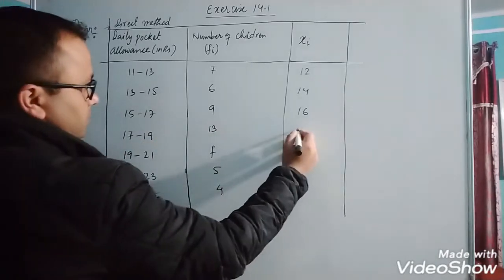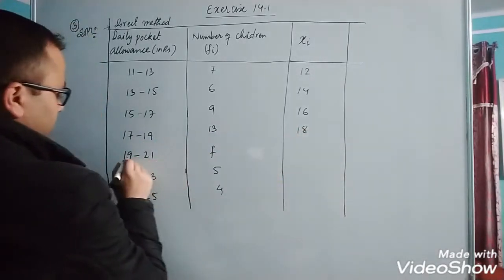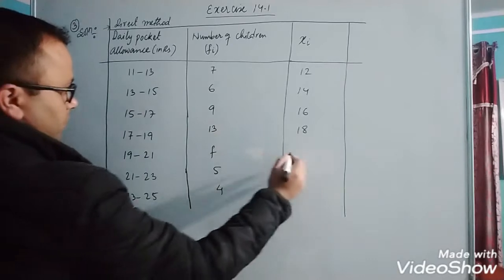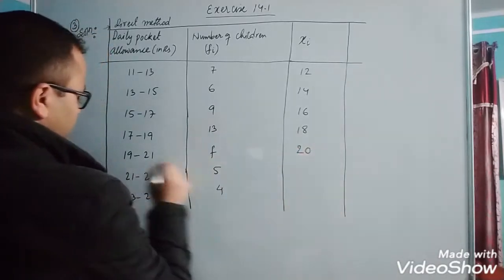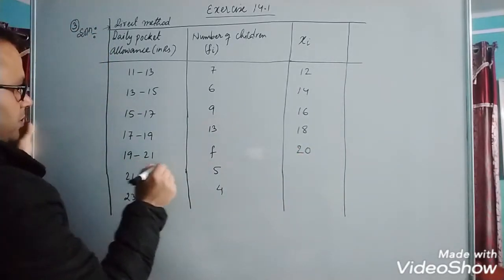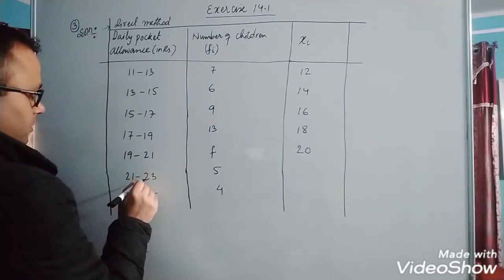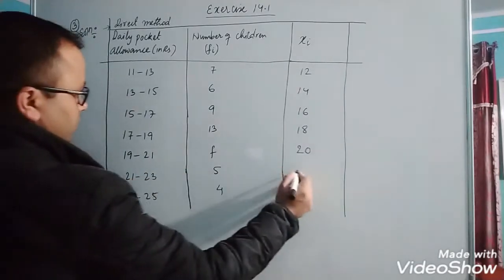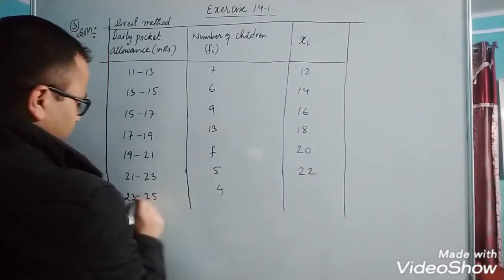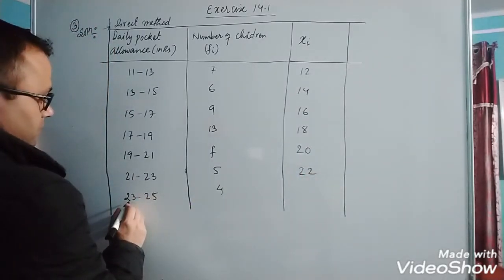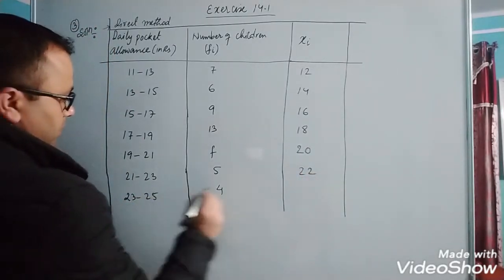19 plus 21 is 40 divided by 2, which is 20. 21 plus 23 is 44 divided by 2, which is 22. 23 plus 25 divided by 2 is 24.